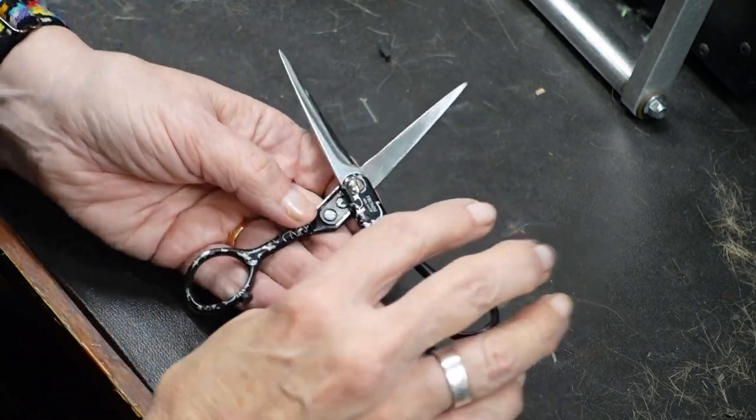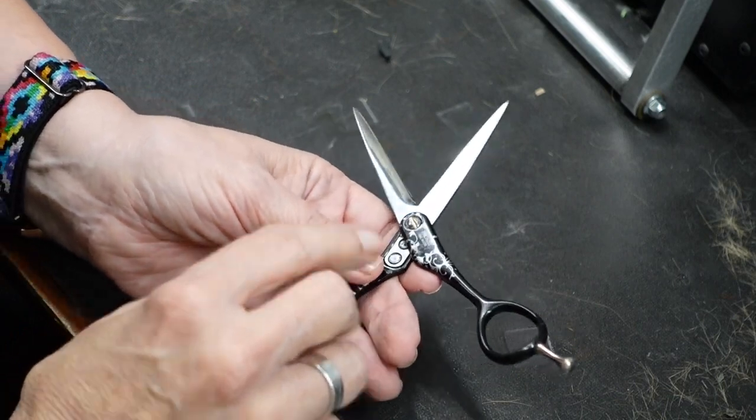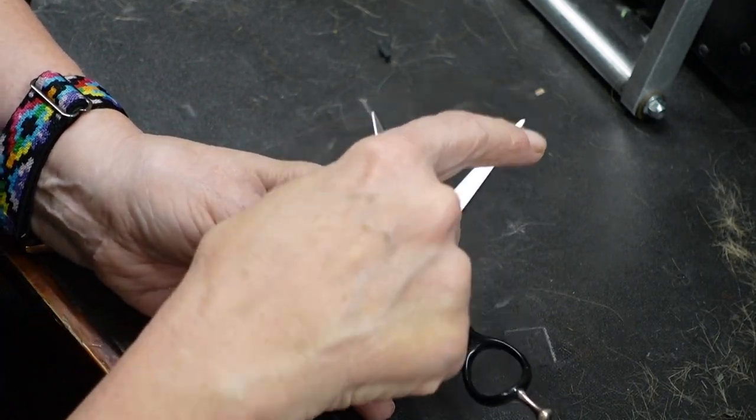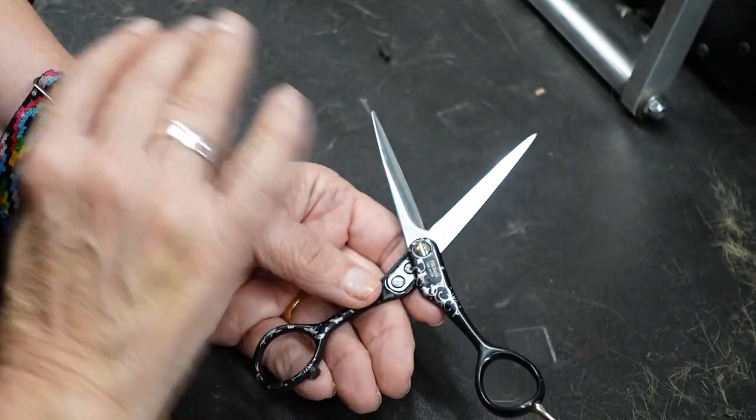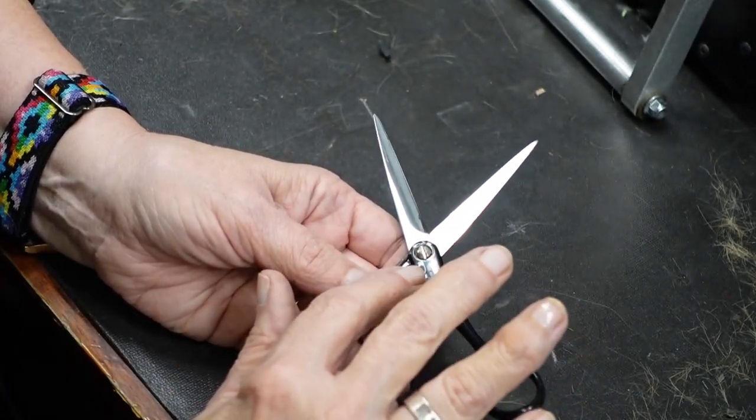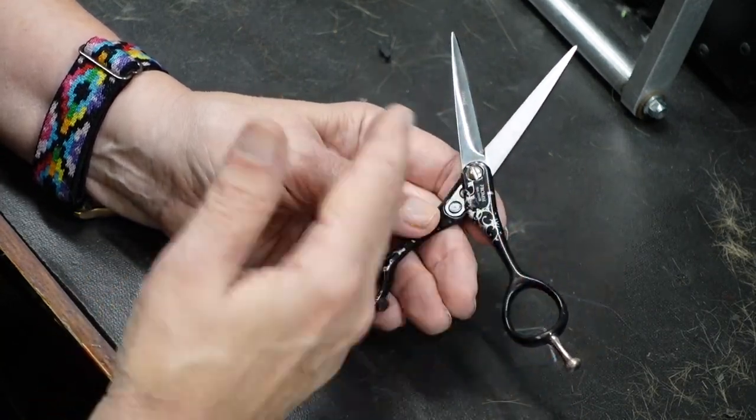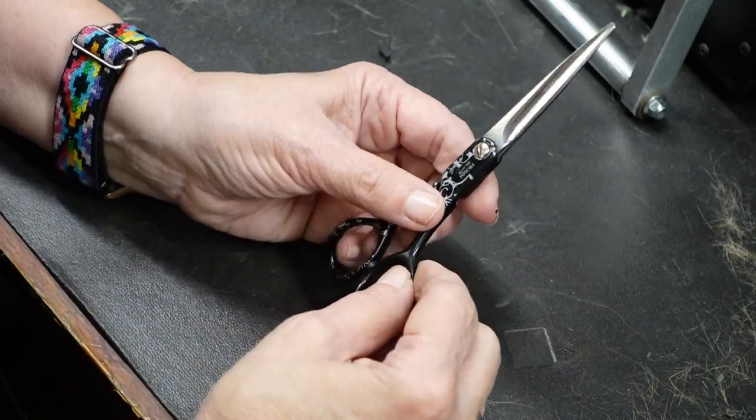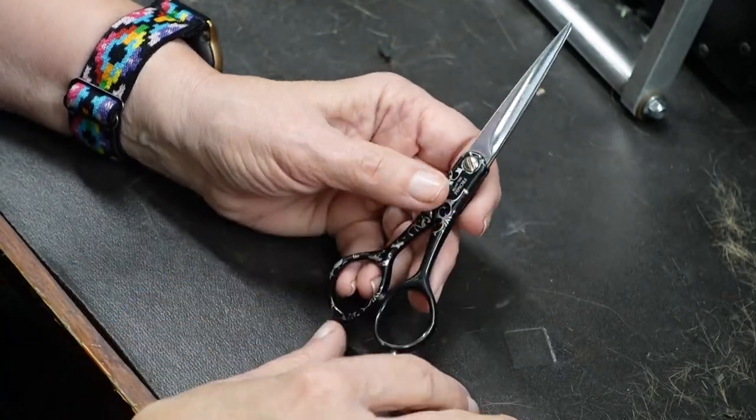And the reason they're too loose, I feel certain, is the person that sharpened them took them apart and tried to do a rod line. Now, I want you to notice how flat this is in there. Anytime you get shears that are beveled that have almost no hollow to them, don't do the rod line.